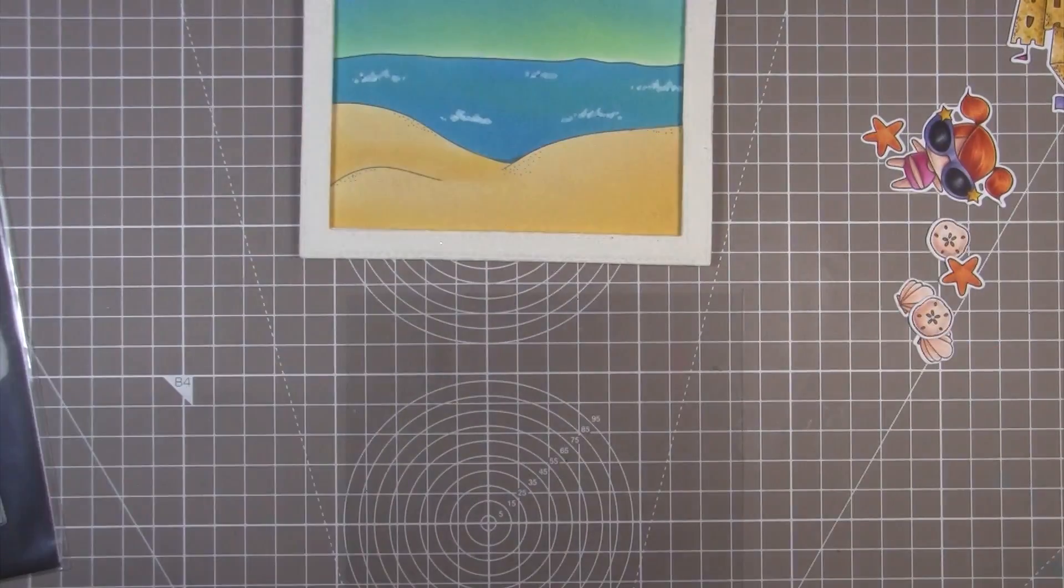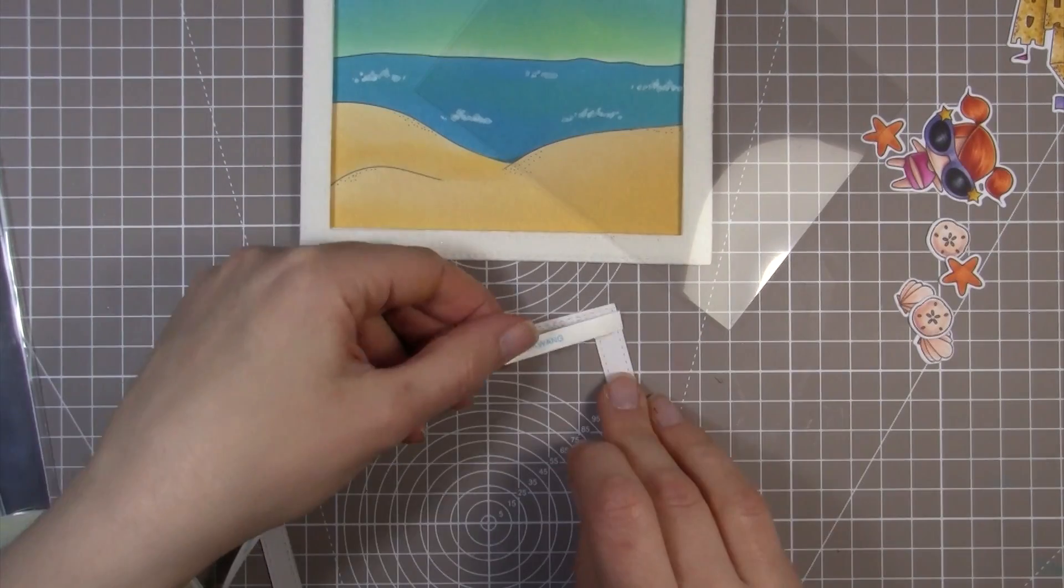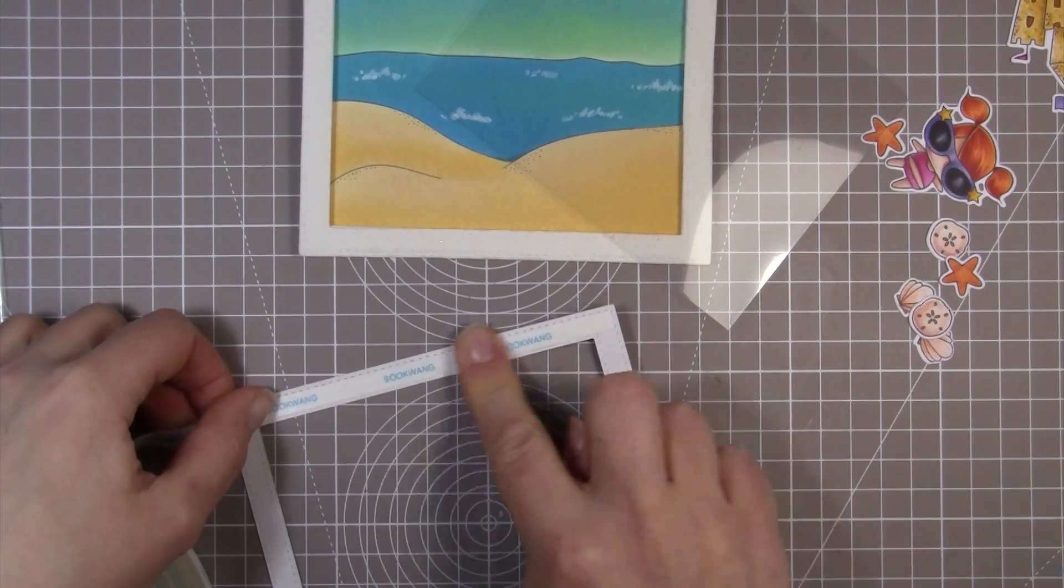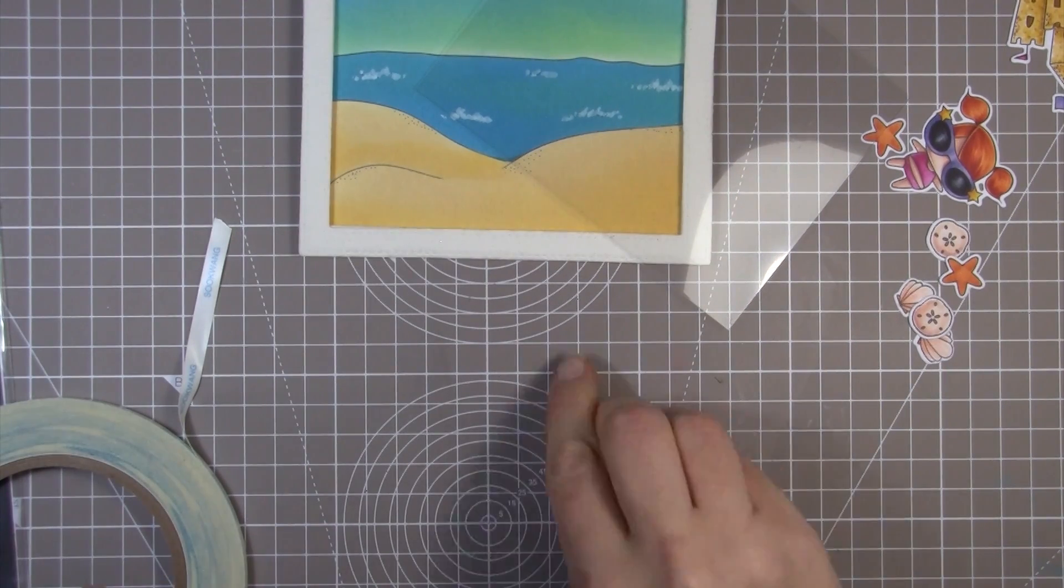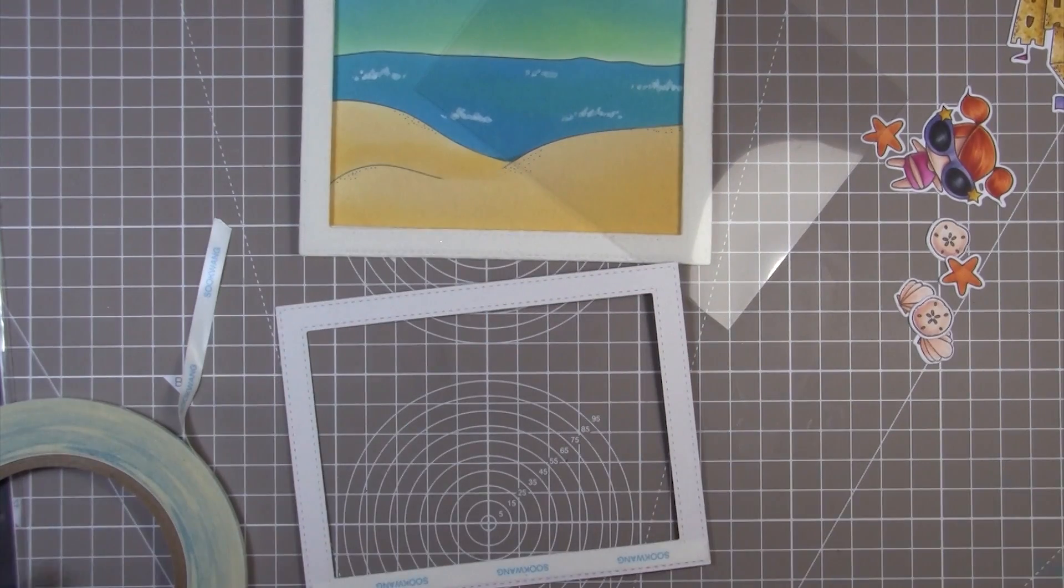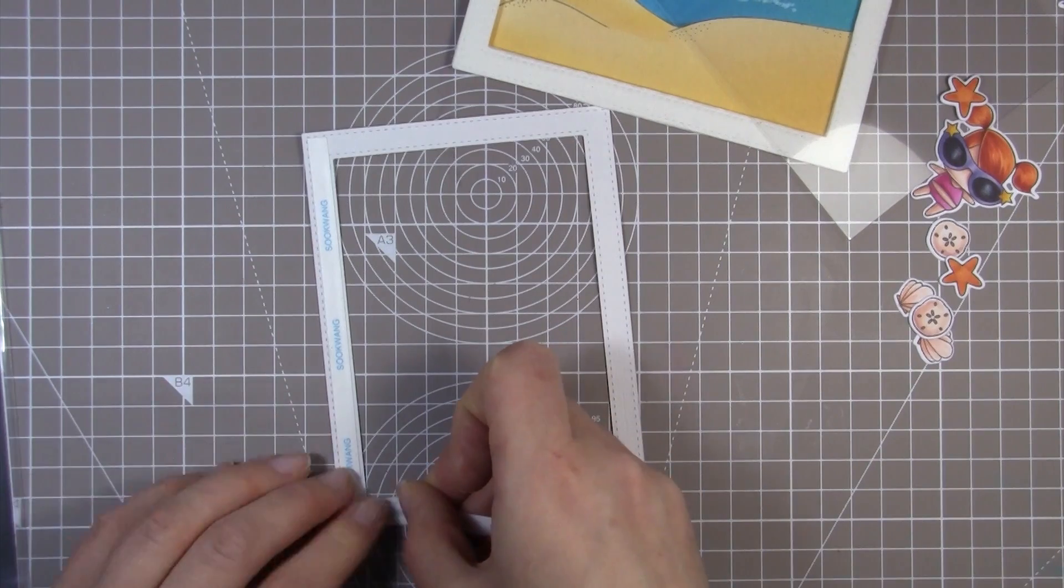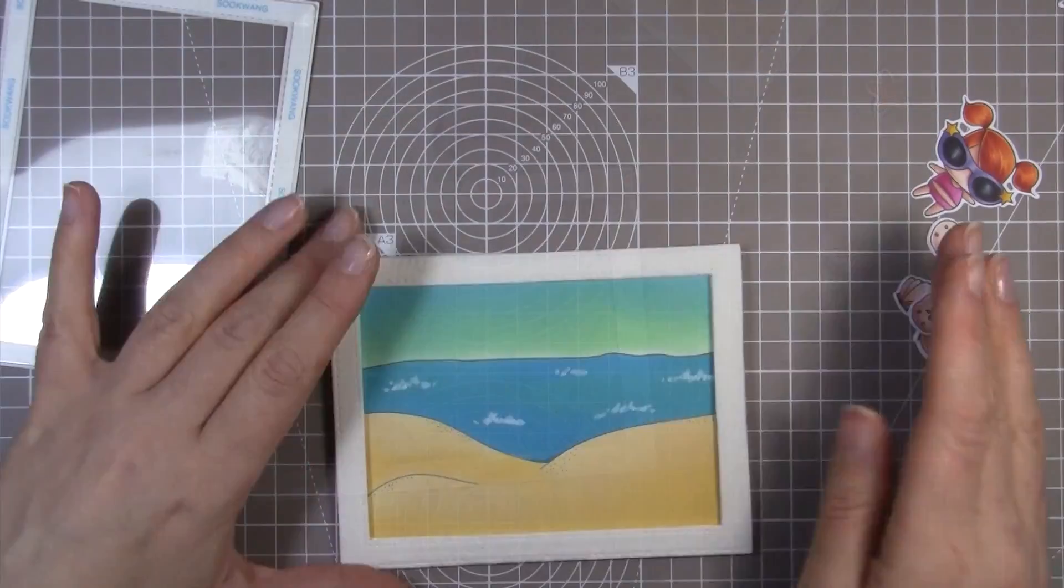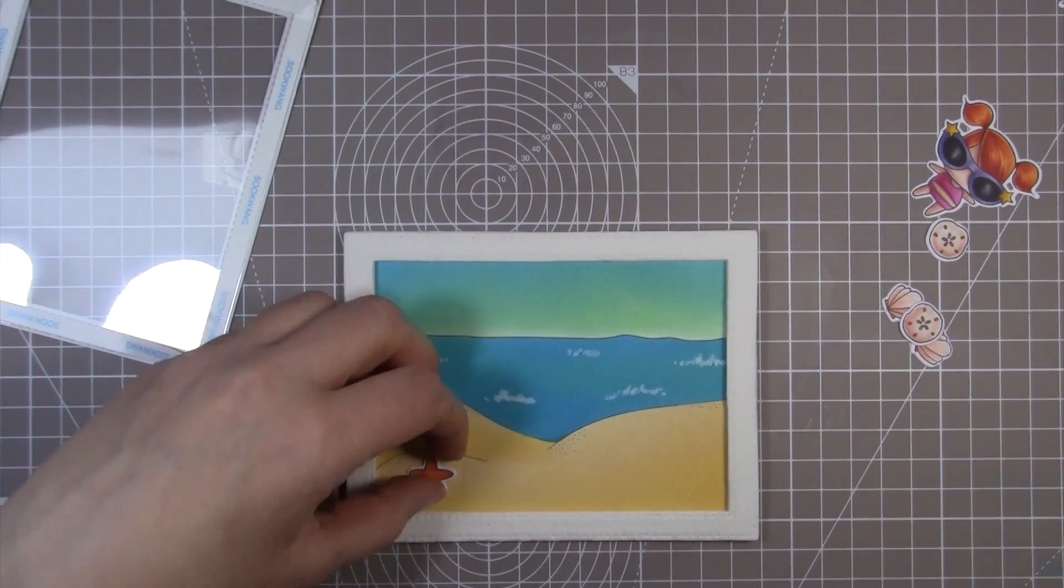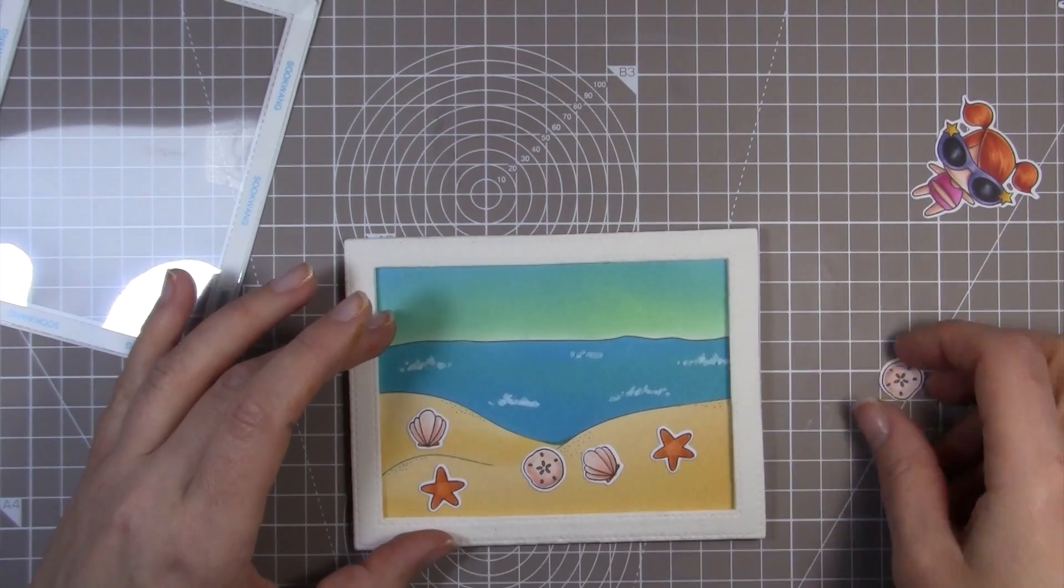I've grabbed some acetate cut down to fit behind that frame. I'm using scor-tape to adhere the black frame to the acetate. Then I'll put it on the acetate as well to adhere it to sandwich that between the top and the fun foam. Once I pop that acetate on the back of this frame, I'm going to fill the shaker bit, which is the fun part.